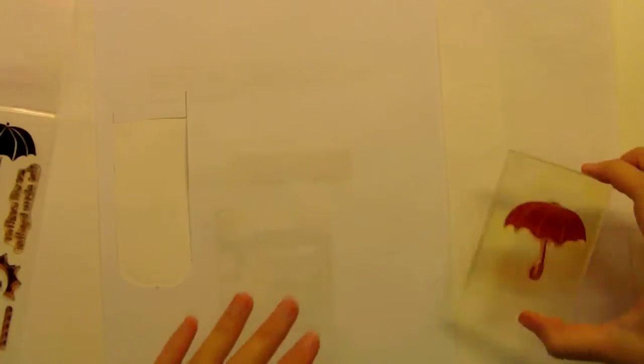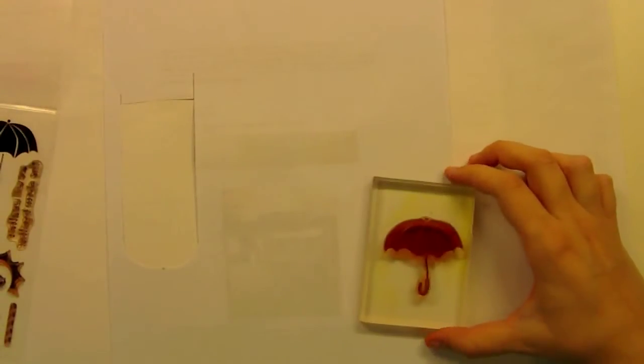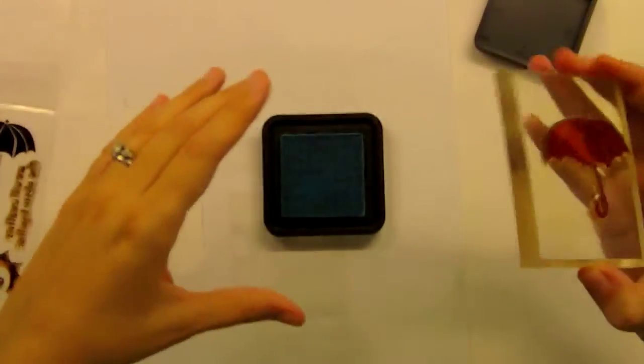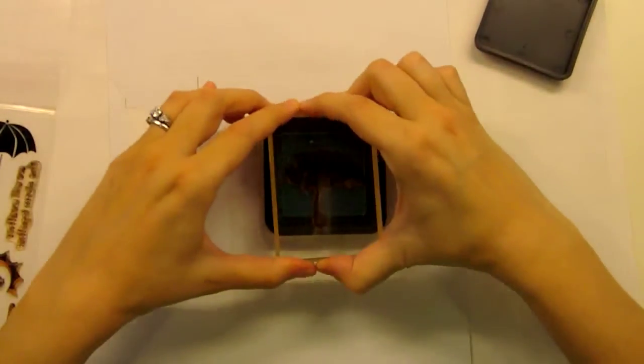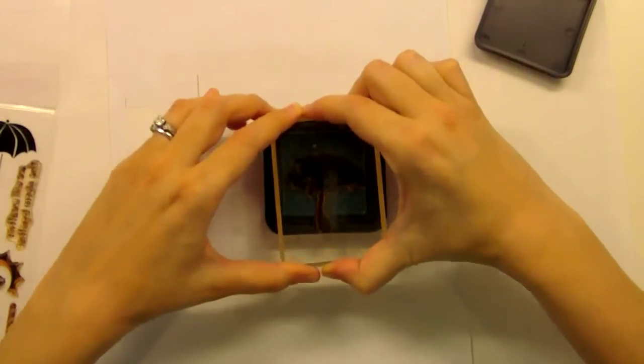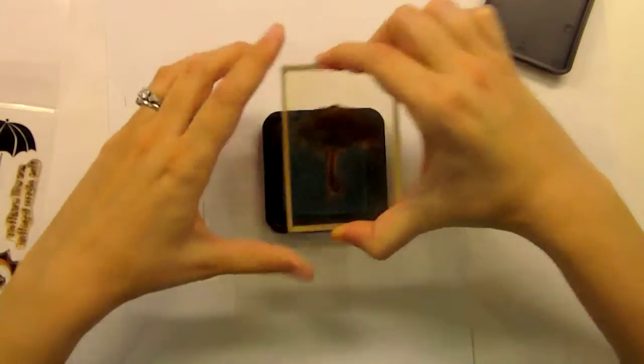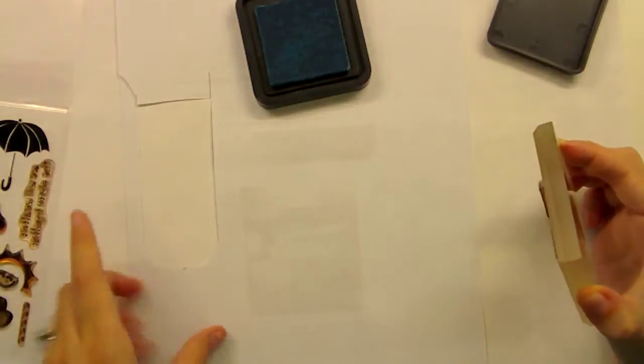The next thing we're going to do is create a mask. This is just some scrap computer paper that I had sitting around. I just grabbed the closest ink pad because it doesn't matter what color you're going to stamp in or how well you stamp it. You just need to get the general image so you can cut it out. I'm going to stamp this extremely poorly.